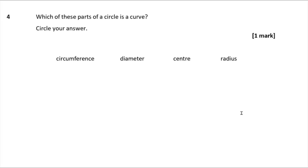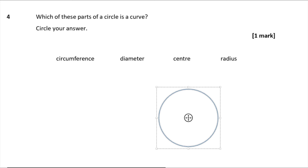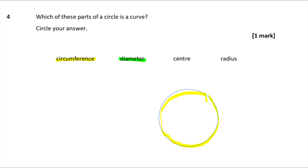Question 4 — which of these parts of a circle is a curve? If I quickly draw a circle, the circumference is the distance around the edge — that curved outer boundary. The diameter is a straight line passing from one side to the other. The centre is just a point. The radius is a straight line from the centre to the edge. So the only curved one is the circumference.